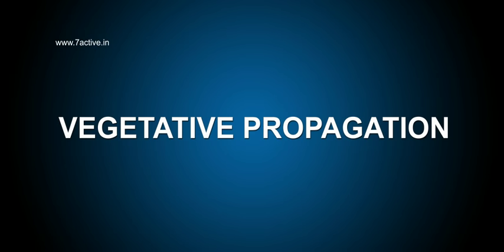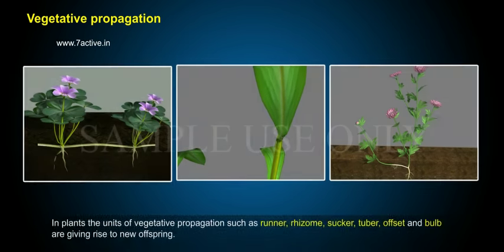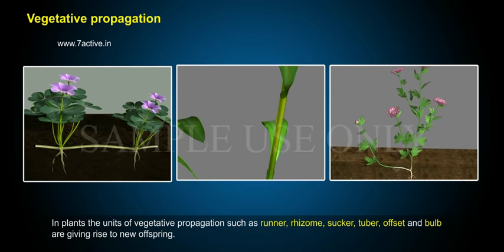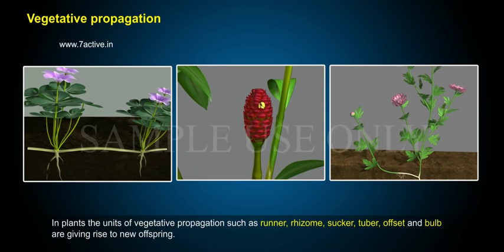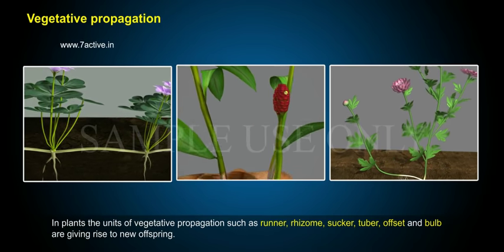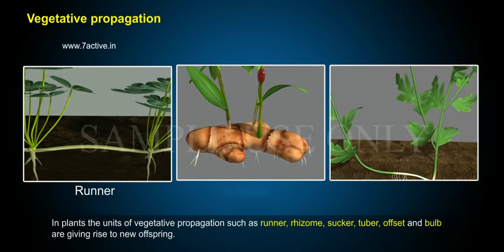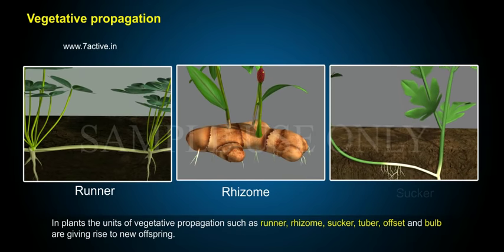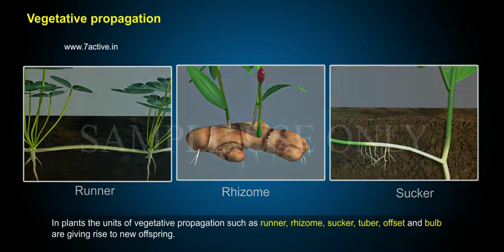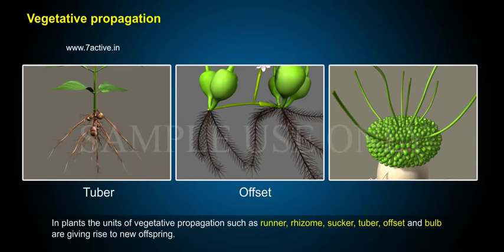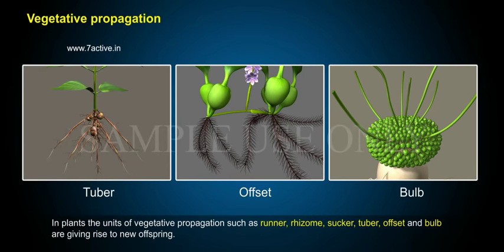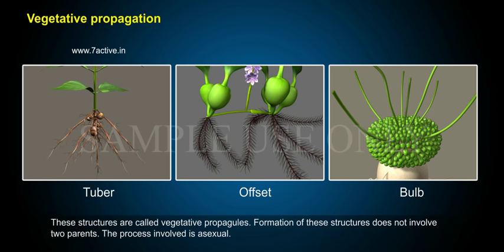Vegetative propagation in plants — the units of vegetative propagation such as runner, rhizome, sucker, tuber, offset, and bulb are giving rise to new offspring. These structures are called vegetative propagules.